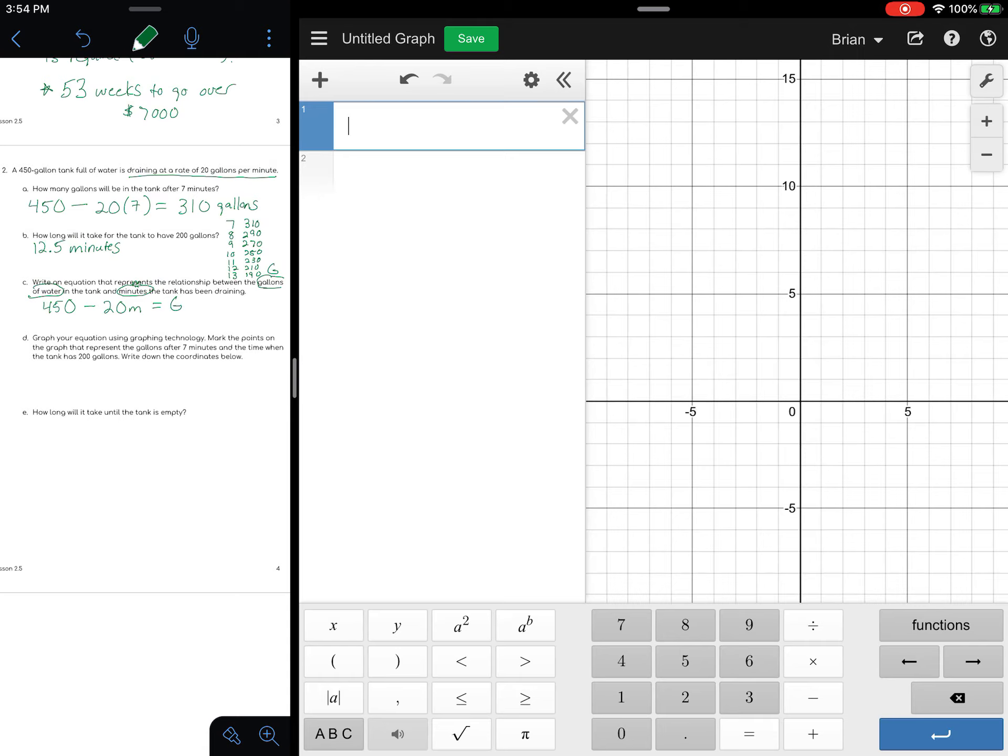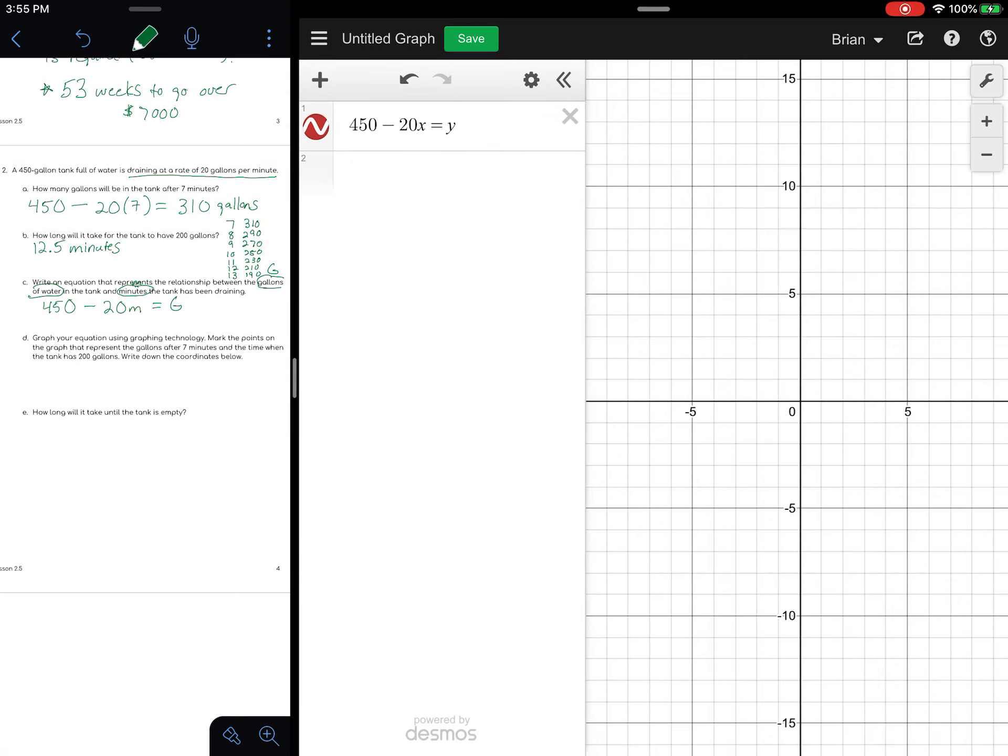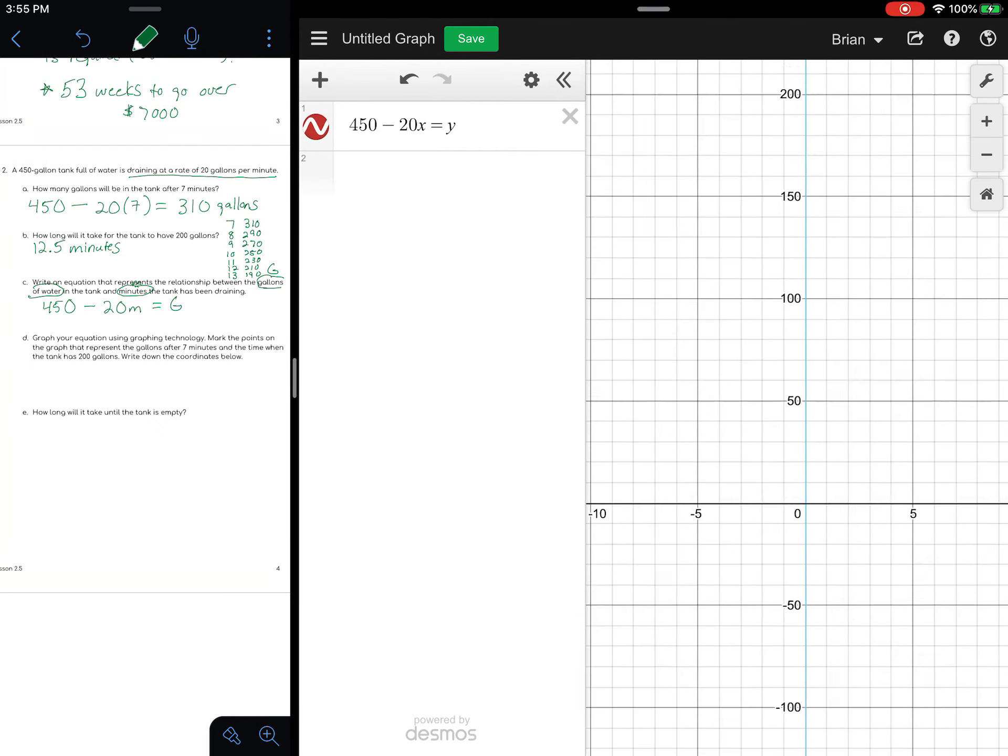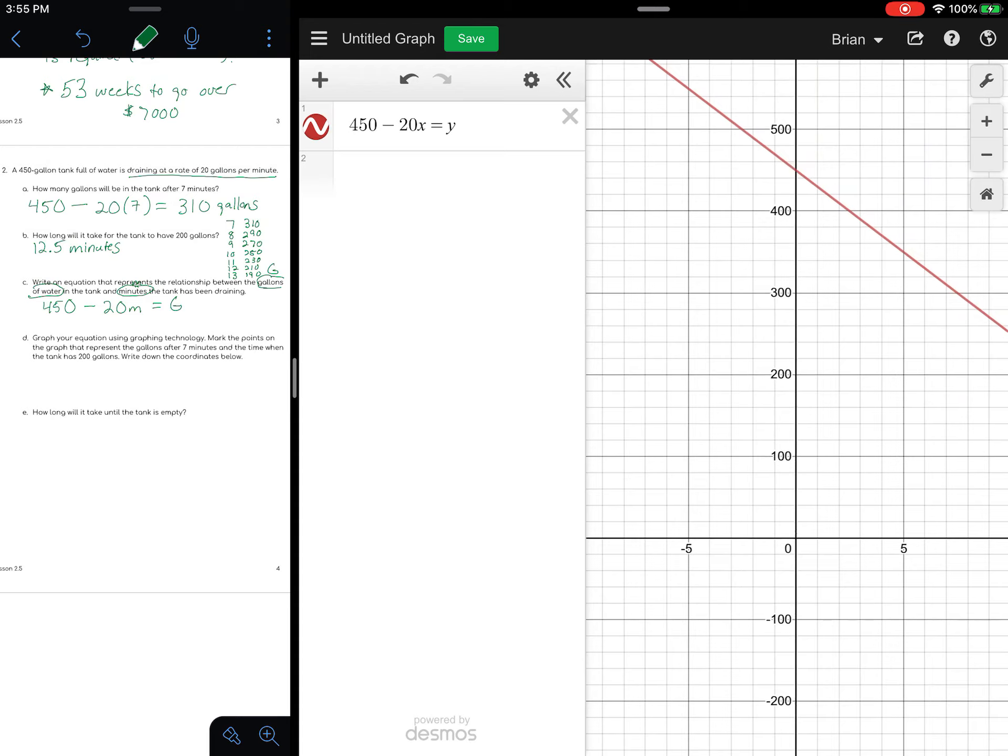Let's go back over here and type that in. We had 450 minus 20, and instead of M we're going to use the variable X, and that equals Y, our total gallons left. Oftentimes these equations will have Y equals at the beginning instead of at the end, but I wanted to sync it up with what we had. Notice I don't even see a line showing up on my graph—that's because my window isn't quite right.